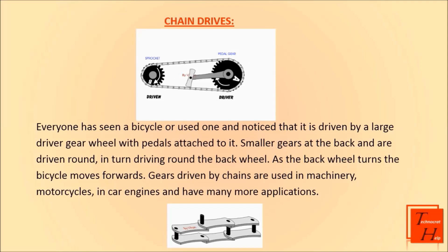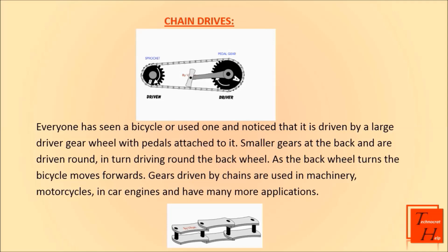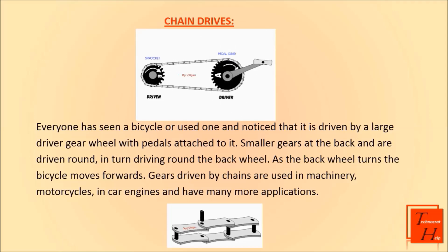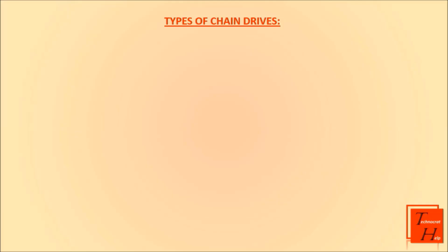One of the best examples of chain drives is a bicycle. Notice that it is driven by a large gear wheel with pedals attached to it; smaller gears at the back are driven round and in turn drive the back wheel, and as the wheel turns the bicycle moves forward. Gears driven by chains are also used in machinery, motorcycles, and car engines.